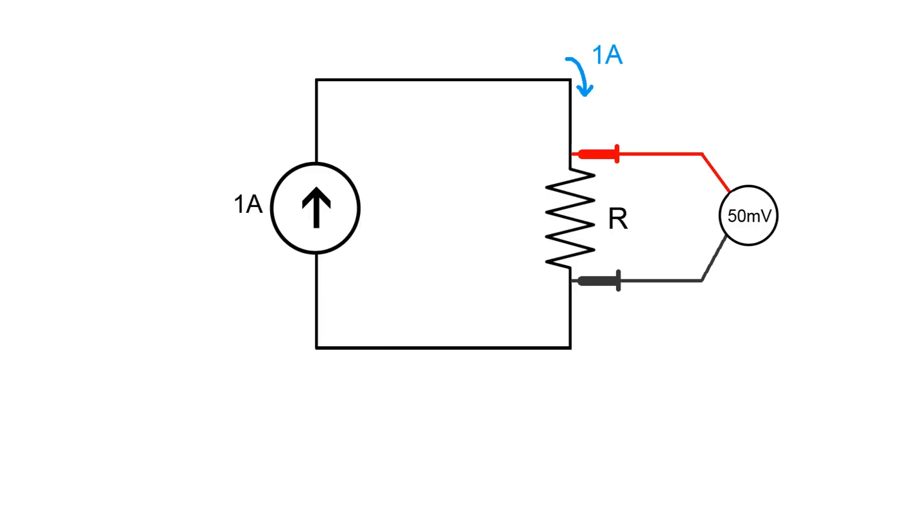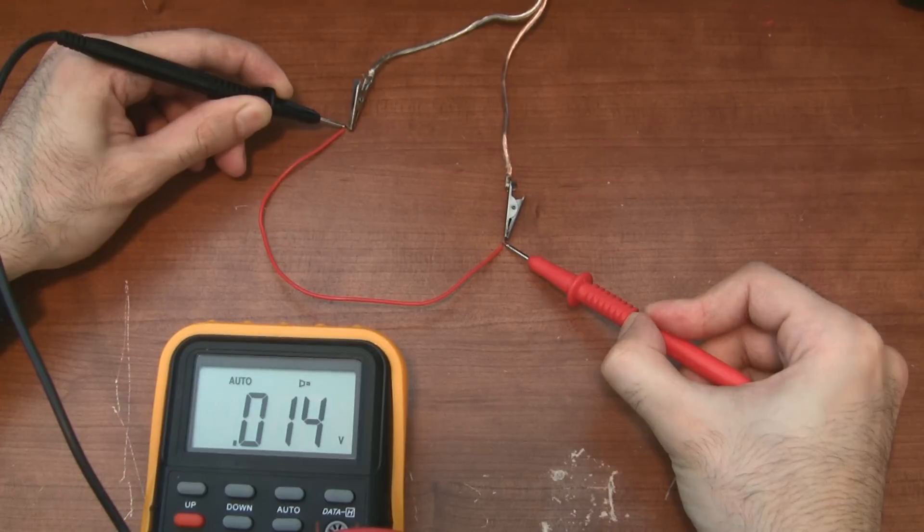So let's say you measure 50 millivolts across the wire you're testing. That means that the resistance of the wire is 50 milliohms. Here I am measuring the voltage across a small piece of wire, and since the reading is 14 millivolts, I know that the wire has a resistance of 14 milliohms.